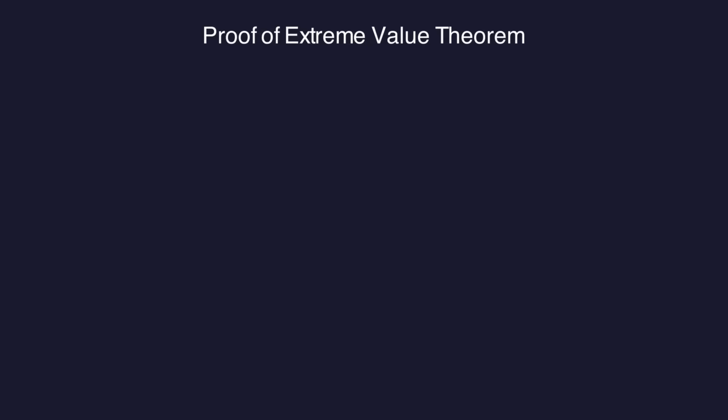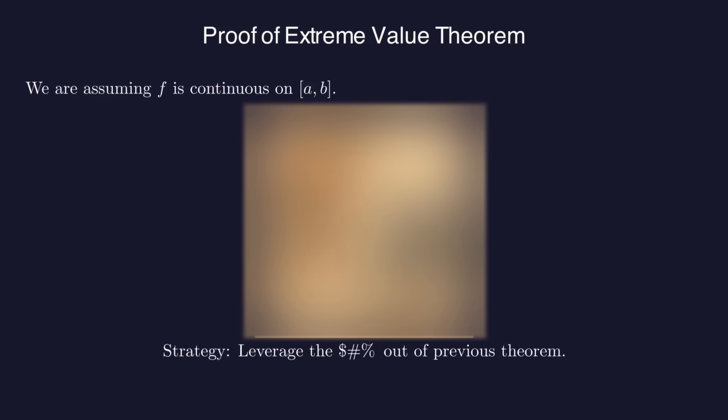We are assuming that F is continuous on the closed interval from A to B. We won't actually use real induction to prove this, but we will use the previous result. Actually, we'll use it twice.